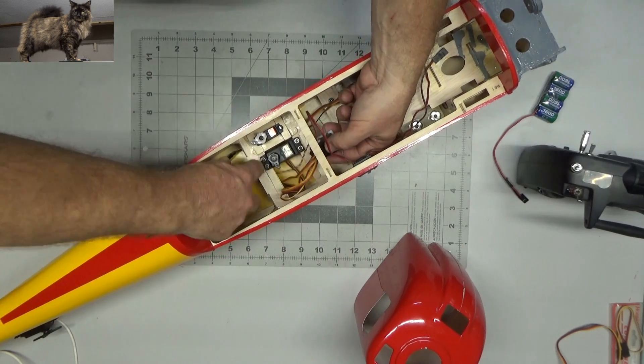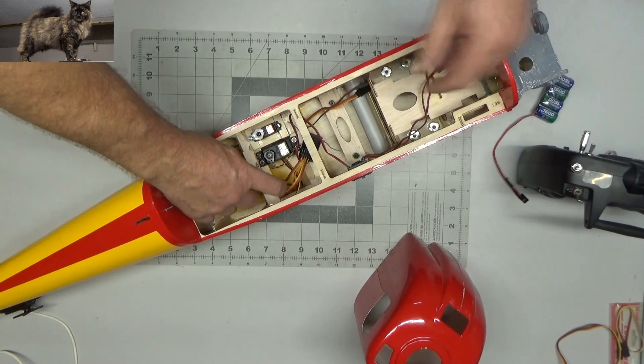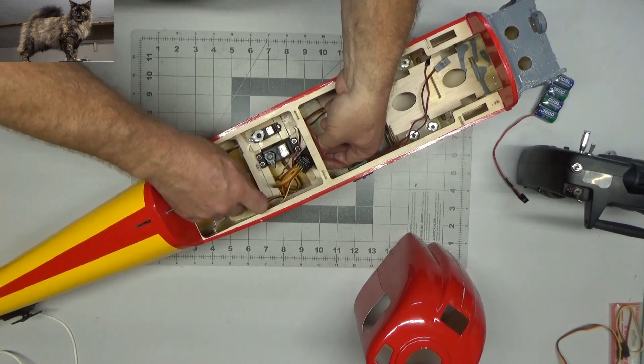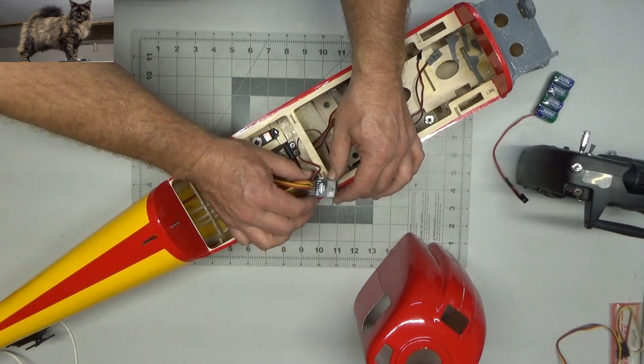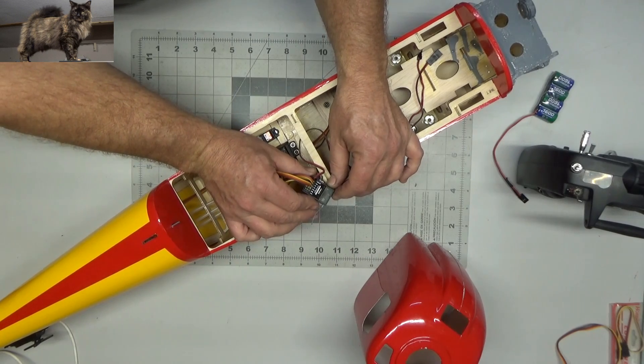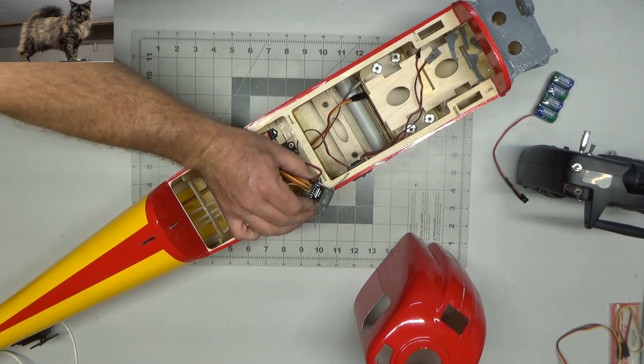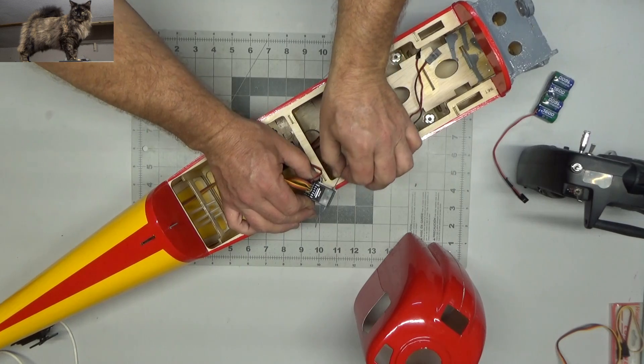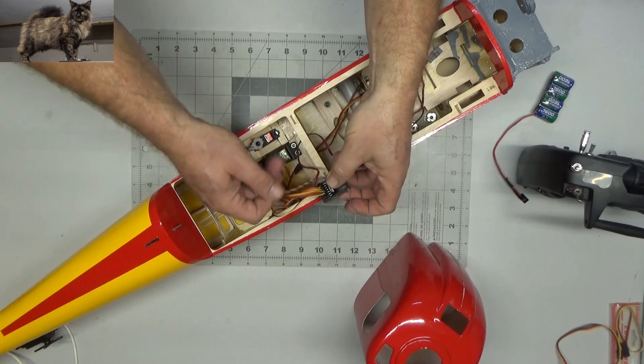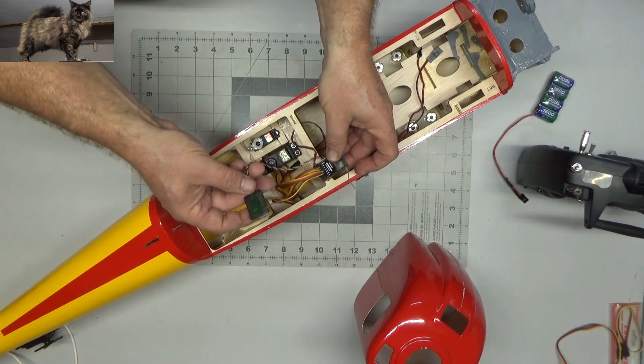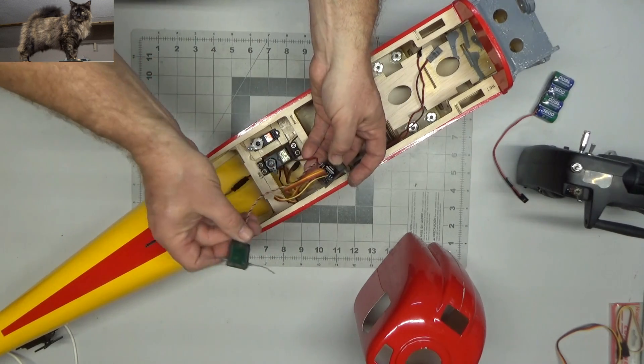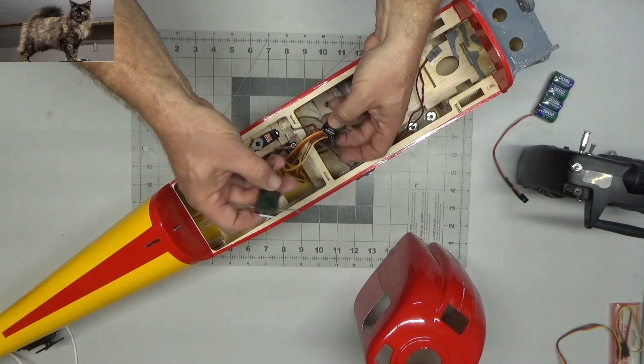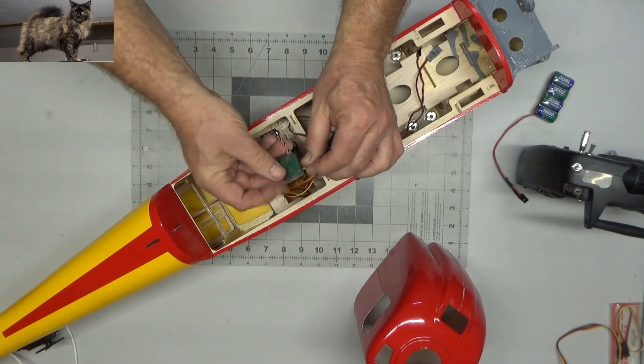Now what I'm using here is this transmitter was given to me a few years ago by a very kind gentleman, as was this Spectrum receiver system here, which is a Spectrum AR6200. It's a discontinued model, but it was new as far as I know, and it comes with the main receiver and then this auxiliary receiver that has two additional antennas.